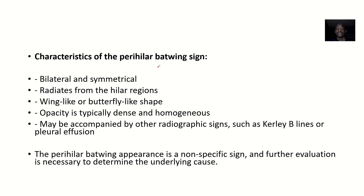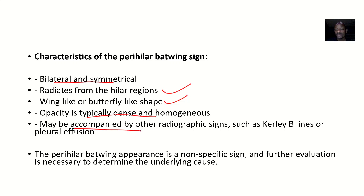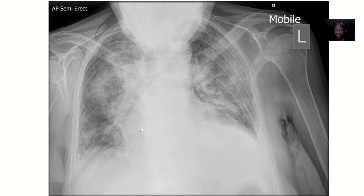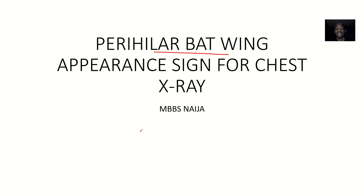The characteristics of a Perihilar Batwing Appearance sign include: it is bilateral and symmetrical; it radiates from the hilar regions; it has a wing-like or butterfly-like shape; and the opacity is typically dense and homogeneous. It may also be accompanied by other radiographic signs, such as Kerley B lines or pleural effusion. That covers the Perihilar Batwing Appearance sign seen on a chest x-ray — its meaning and what it indicates.